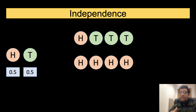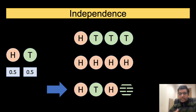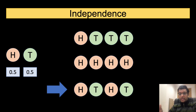Let us look at another sequence of four tosses resulting in four heads. Even after four heads, the probability of obtaining a head in the fifth toss is still 0.5. This clearly means that the probability of observing heads on the fifth trial stays constant irrespective of what we observe on the first four tosses of the coin. Similarly, for an alternating heads and tails sequence, the probability of observing heads in the subsequent trials continues to stay the same.